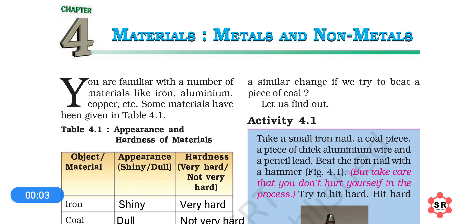Hello friends, this is Ravi Verma and in this video I am going to start Chapter 4 from the NCERT textbook of science for class 8th. The title of the chapter is 'Materials: Metals and Non-Metals.' In this chapter we will learn that materials can be classified into metals and non-metals on the basis of their physical and chemical properties.